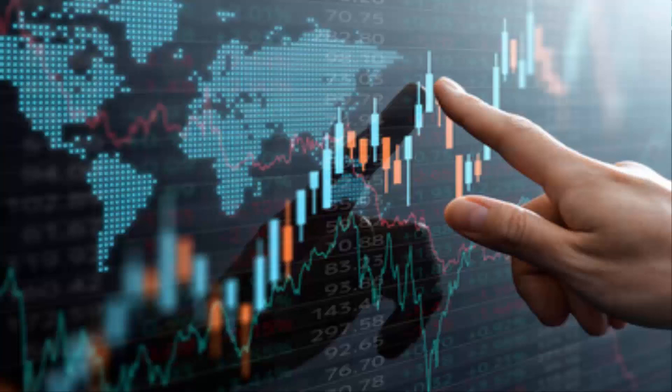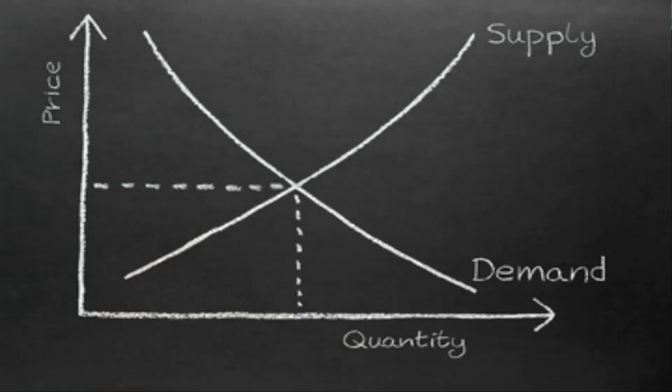Let's outline some of the basic factors that can influence or contribute to the price of a digital asset in general. Number one, supply and demand. When there's low supply and high demand for an asset, the price is likely to rise, and vice versa. Very easy to understand.